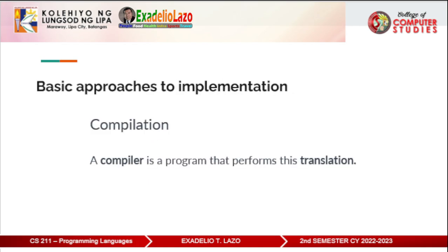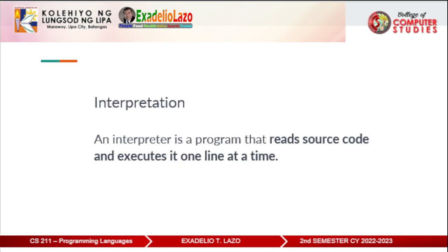The basic approaches to implementation: first, compilation — a compiler is a program that translates source code into machine code which can be directly executed by the computer. The resulting executable code is typically faster and more efficient than interpreted code. Interpretation is the process of executing source code directly without first compiling it; an interpreter reads source code and executes it one line at a time. Interpreted code is often slower than compiled code but can be more flexible and easier to debug.